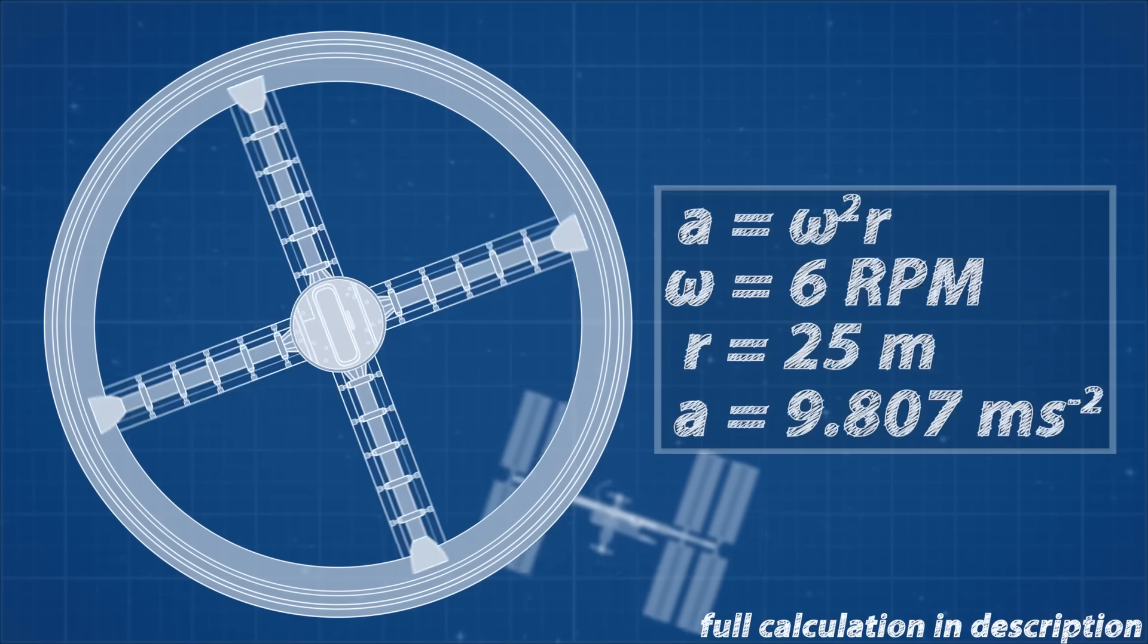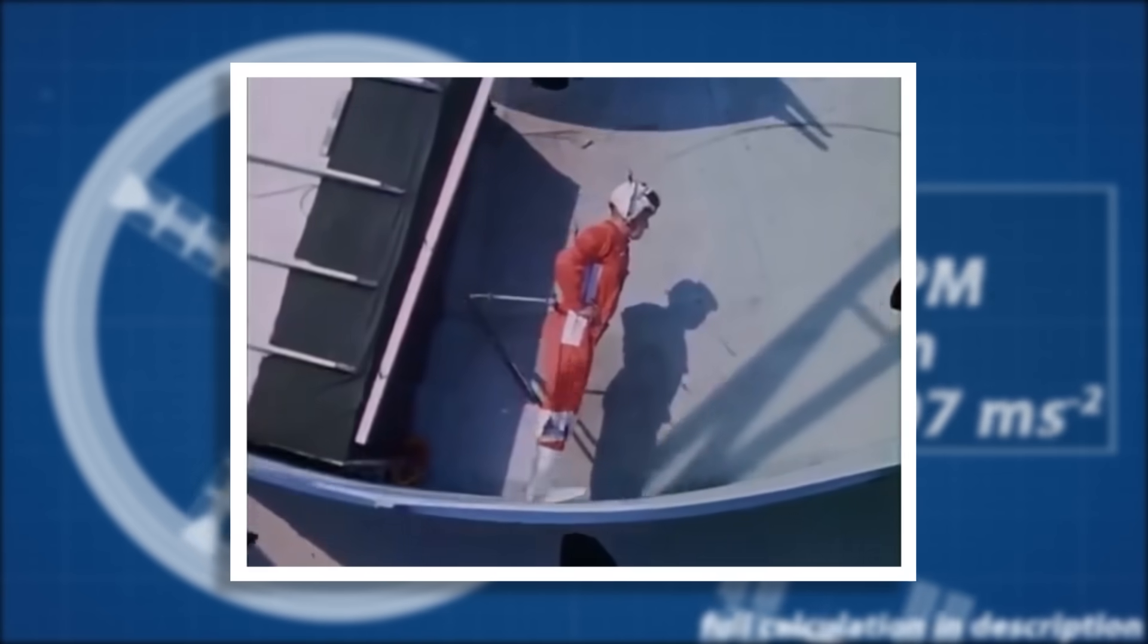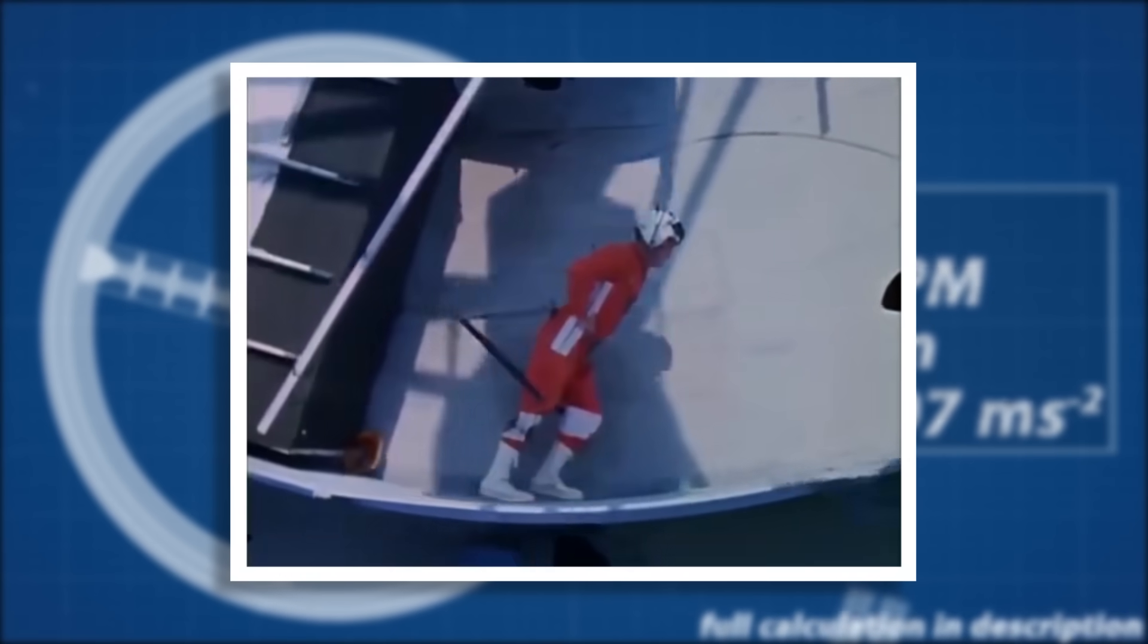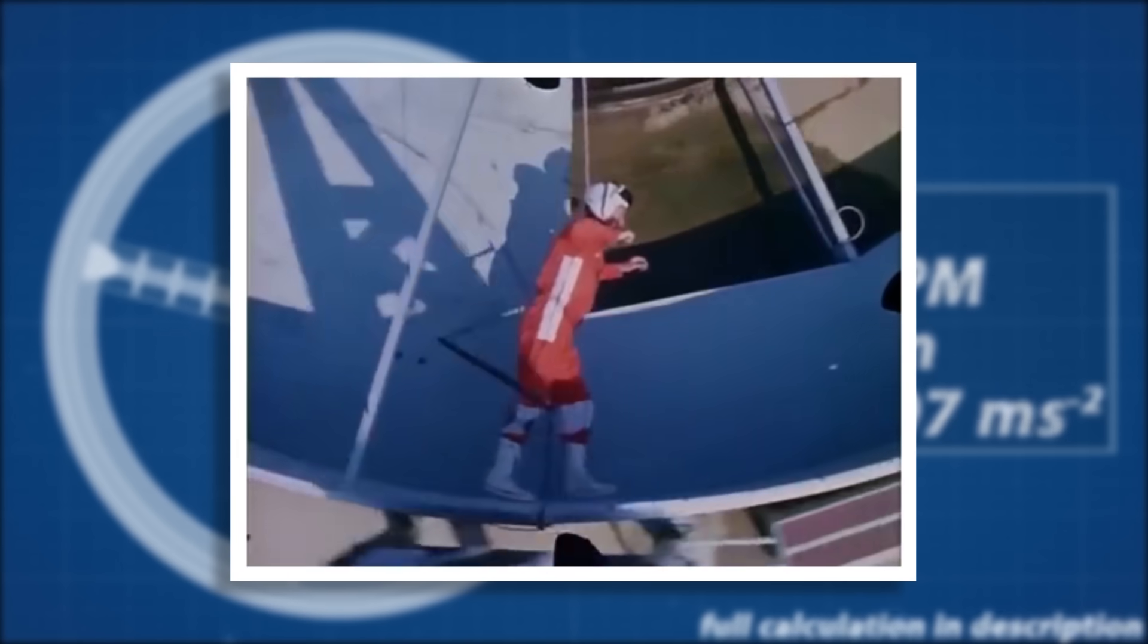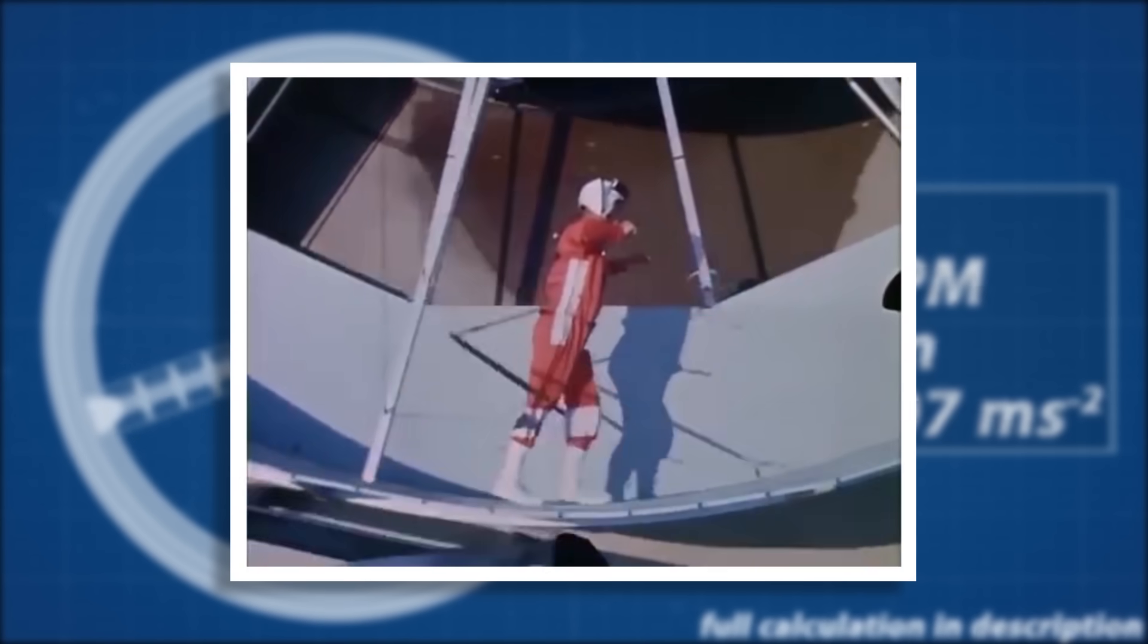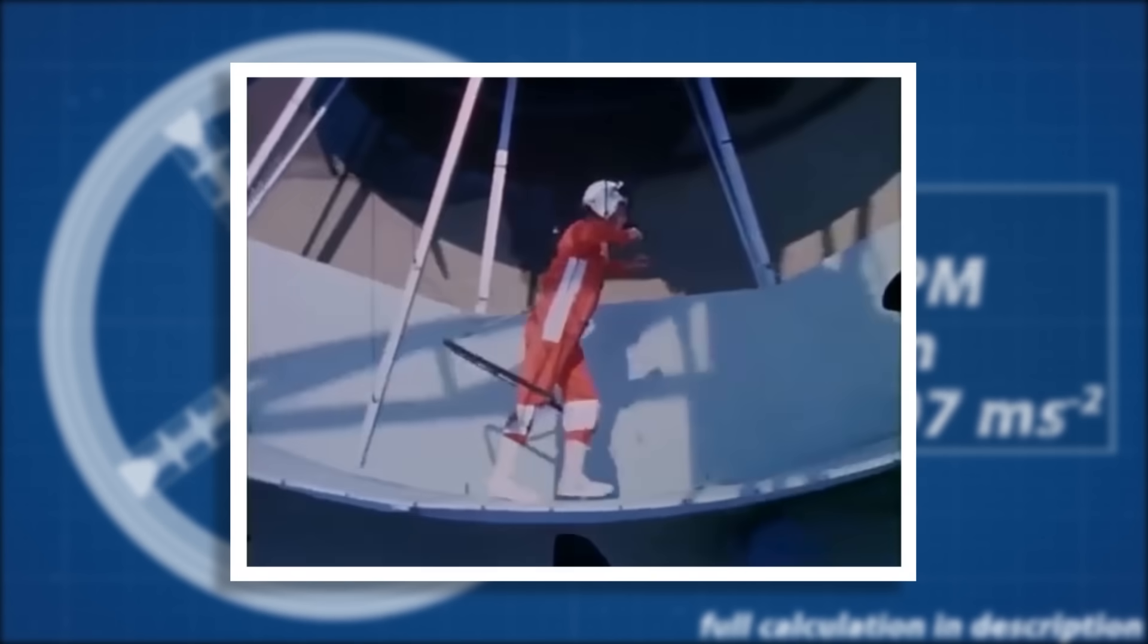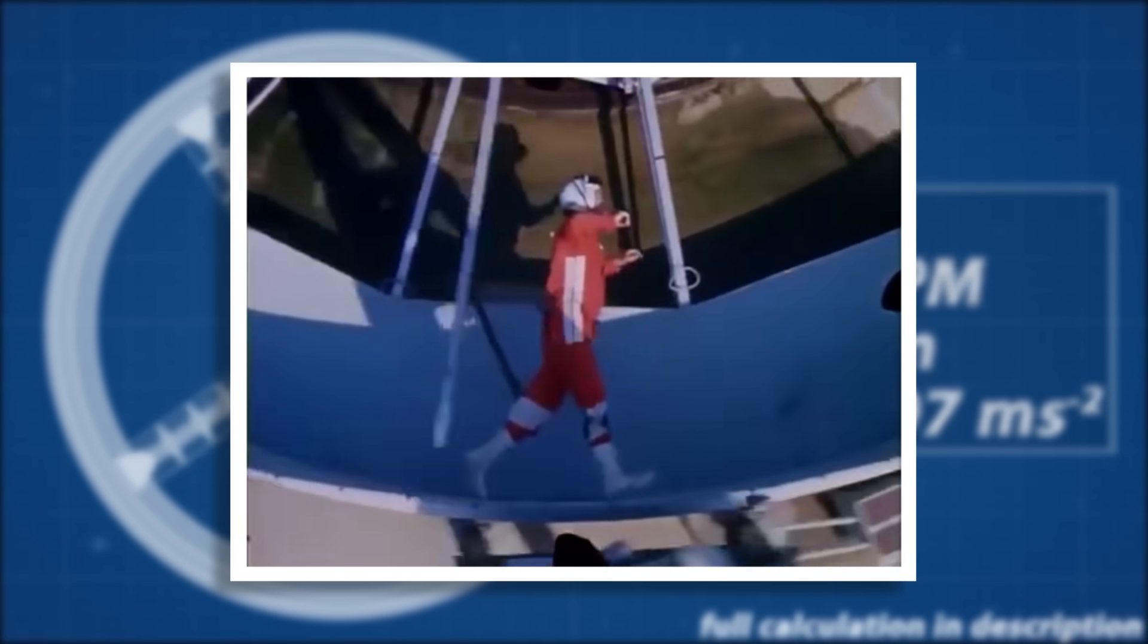Another problem we face on smaller stations like this is the gradient in acceleration you would experience. Because the acceleration is directly proportional to the distance to the rotational center, your head will experience less artificial gravity than your feet. This would force the blood to your feet, just like when you spin a bucket of water around. This effect diminishes with larger stations, so to make a practical space station with artificial gravity, the station would have to be huge, which is simply too expensive.